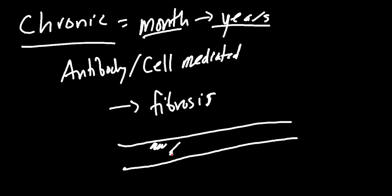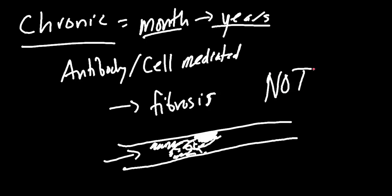Fibrosis accumulates in the endothelium, eventually causing occlusion, leading to necrosis and ischemia — and you lose the organ. Cell-mediated damage or antibody damage destroys the endothelium, causing localized inflammation, more damage, scarring, and buildup. There is no treatment for chronic rejection. For acute, you could try immunosuppressants and steroids, but for chronic, the only option is to get a new organ.